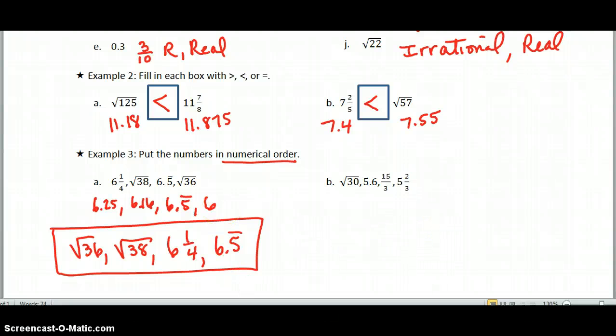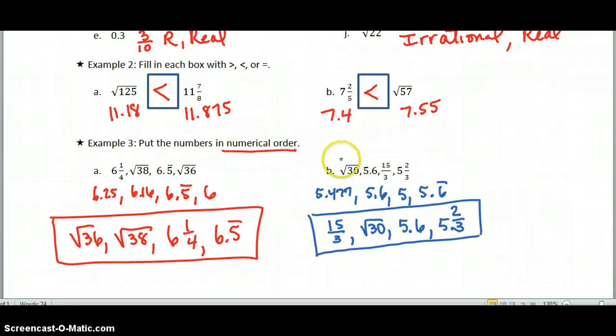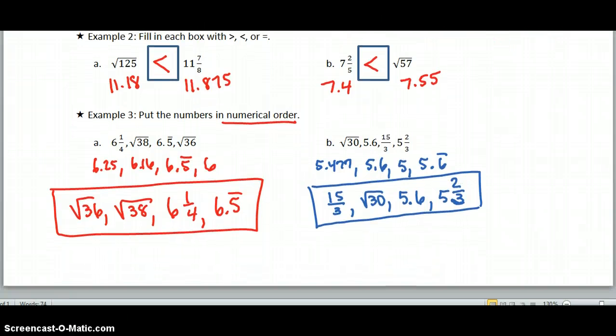Why don't you pause right here and see if you could do B without me. Okay, hopefully you went ahead and converted the square root of 30 to 5.477, and 5.6 was given. 15 divided by 3 is 5, and 5 and 2 thirds is 5.6 repeating. So when you list them from least to greatest, your answer should look like this. And this is 5 and 2 thirds. All right, flip your paper over to the back.